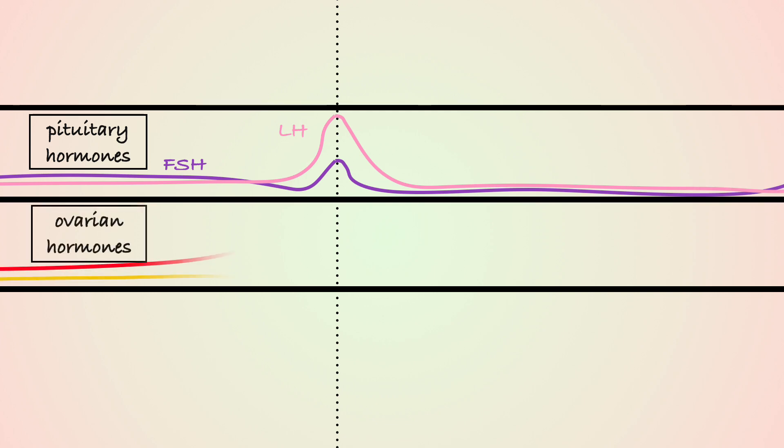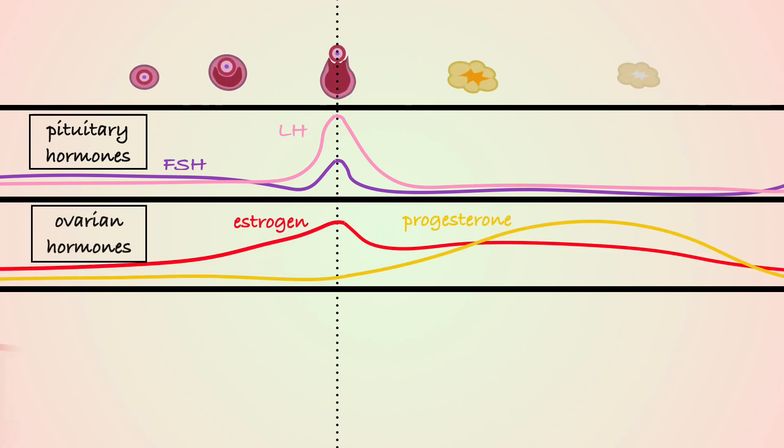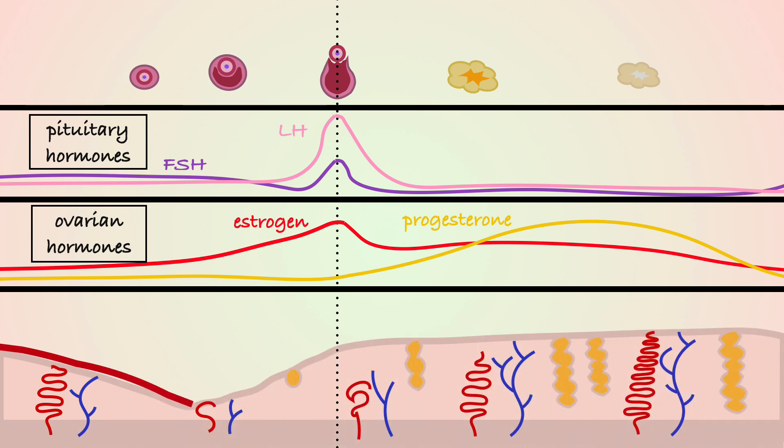The menstrual cycle is a process of interconnected hormonal, ovarian and uterine changes with an average length of 28 days that make pregnancy possible.